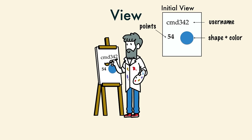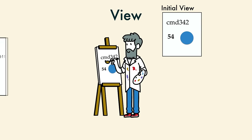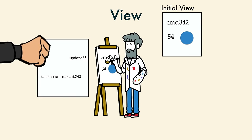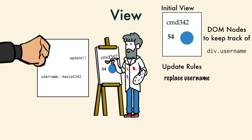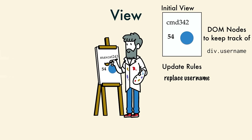But then the model sent the view an updated username. He had to know how to change his painting to show the new username. To do that, he had to keep track of a username div. He dutifully updated the DOM directly.